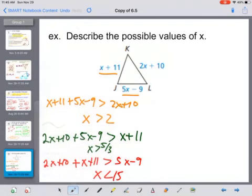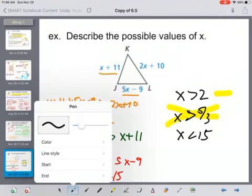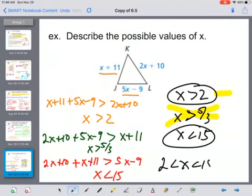Greater than 2 is going to cancel out the greater than 5 thirds. Because as long as it's greater than 2, it is already greater than 5 thirds. So I don't need that one. So my answer is greater than 2 and less than 15. Or you can write it as a compound inequality of between 2 and 15.